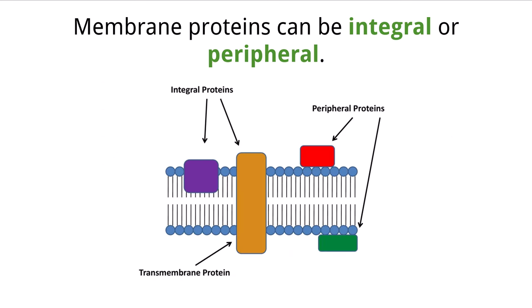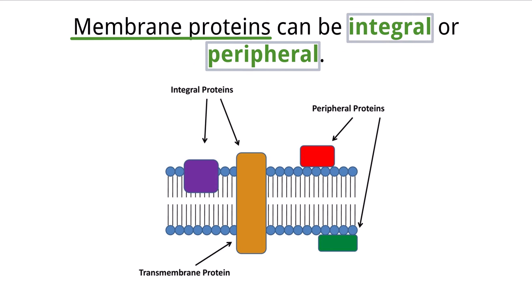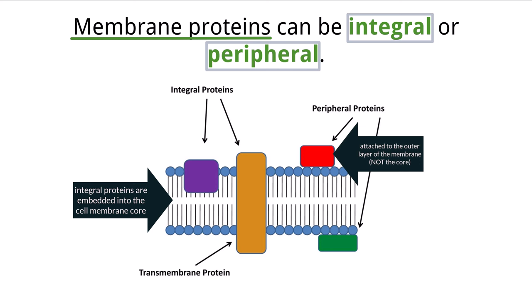The cell membrane is made up of many phospholipids, but there is so much more present than just phospholipids. Membrane proteins play a large role within the cell membrane and have many different structural forms and functions. When we look at the orientation of the protein within the lipid bilayer, we can classify them as either peripheral or integral. The main difference is that integral proteins are embedded into one or both lipid layers of the membrane, where peripheral proteins are attached to the surface of the bilayer.